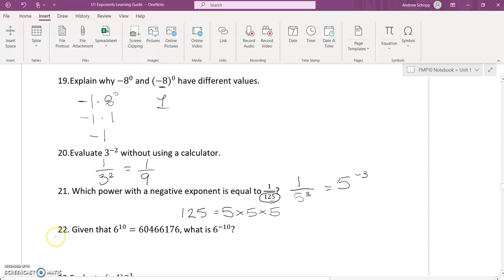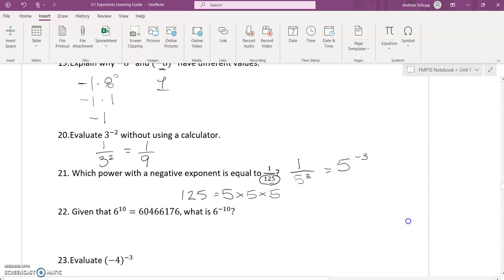Question 22: Given that 6^10 equals 60,466,176, what is 6^-10? How should we approach this question?